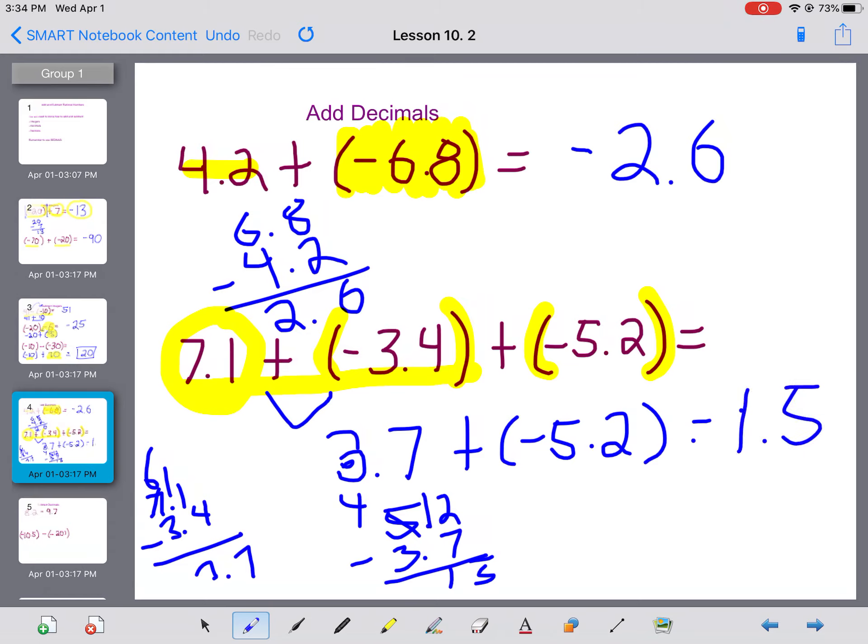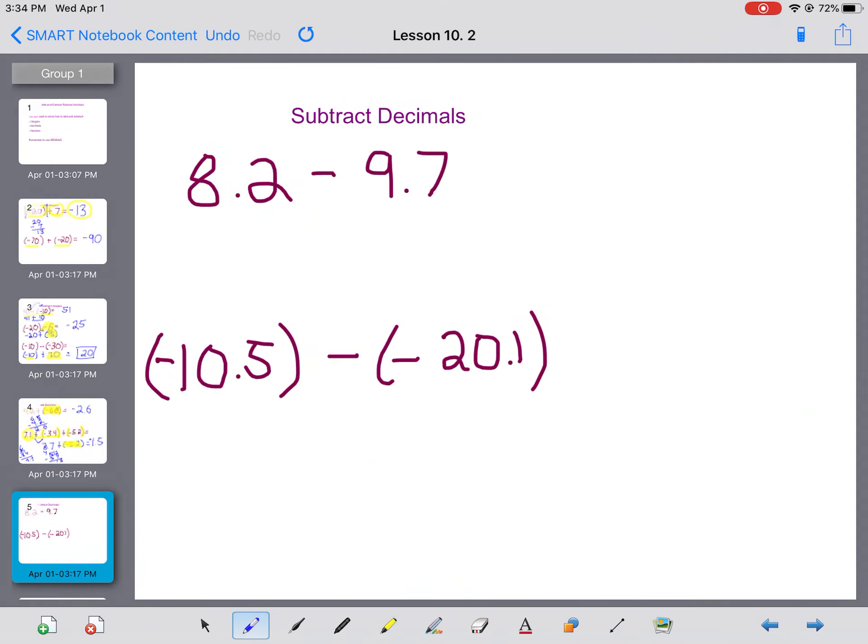And I end up with 1.5. Is it positive or is it negative? It's negative because my negative number had the bigger absolute value. So don't forget to slide it in there.